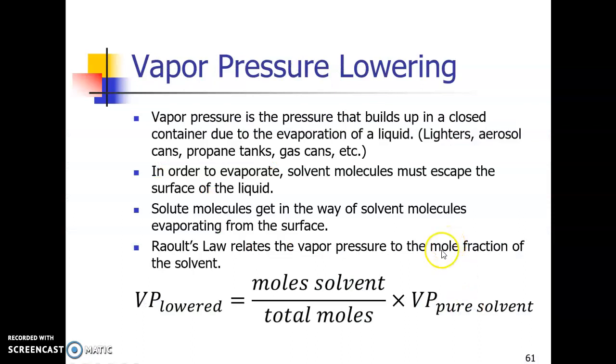Let's go over a few things here with the different types of colligative properties. The first we'll start with is vapor pressure lowering. So let's start off with what is vapor pressure? Well, vapor pressure is the pressure that builds up in a closed container due to the evaporation of a liquid that is contained within that container.